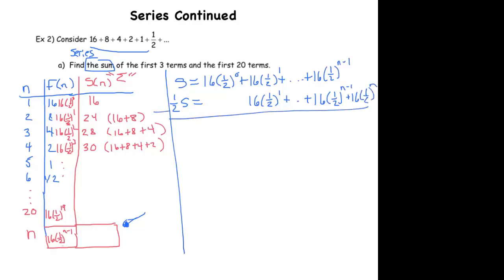And now we subtract. So when you subtract, this is one minus a half S, well that's just one half S. 16 times one half to the zero, is just 16, minusing zero here, is just a 16. And then everything else cancels, except you have zero minus 16 times one half to the n.